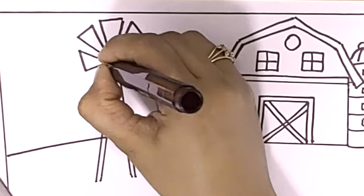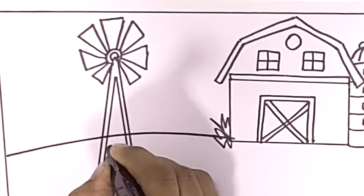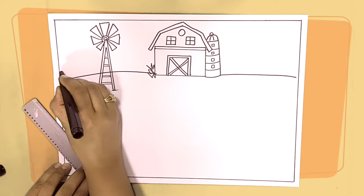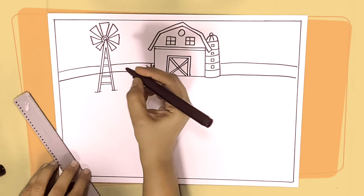The blades are also all triangle shapes, so this is a very easy way to draw the windmill. Then you can add some more detailing in the windmill — we're done. Now we are adding a fence to give the farm a boundary.